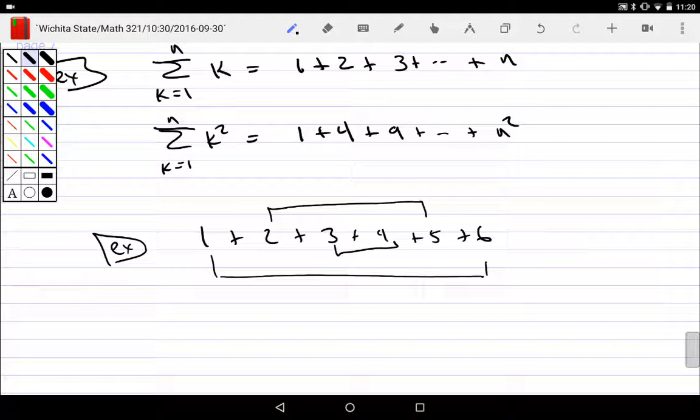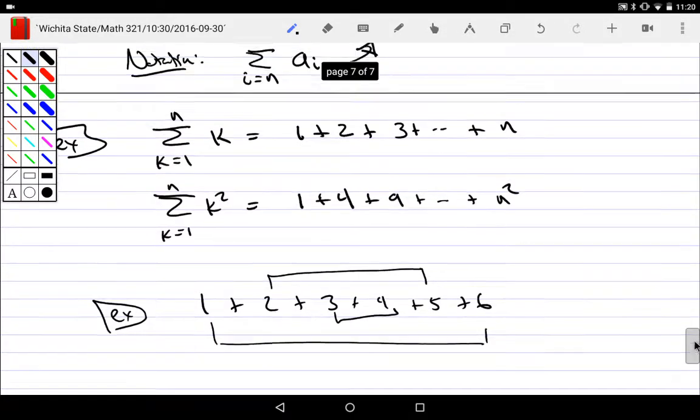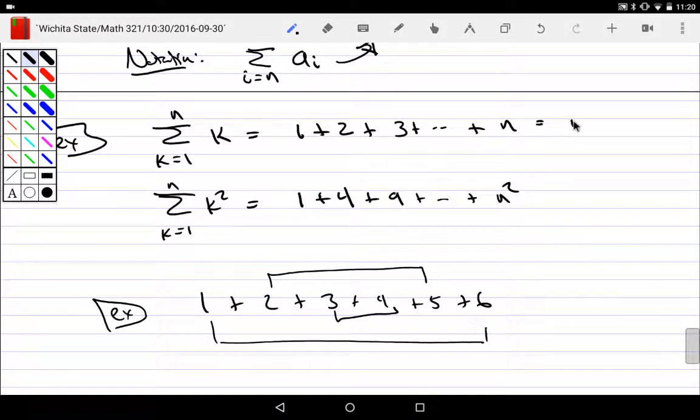Why do I have 3 pairs? How many numbers are there? 6. That's actually 6 times 7 over 2, right? And so what this will always end up being is the last number times the next number over 2.